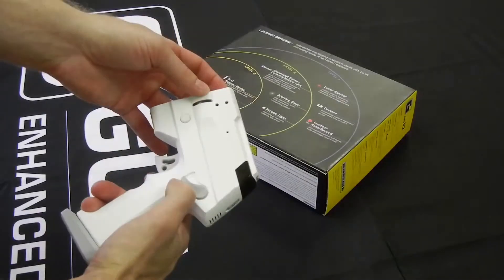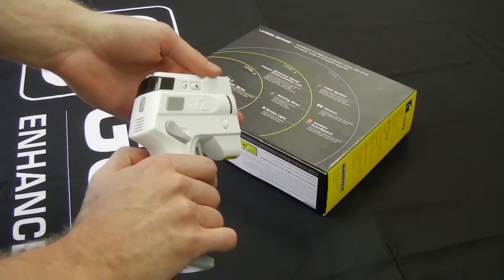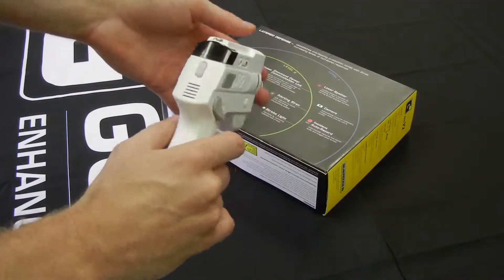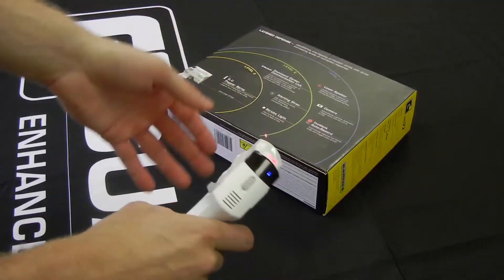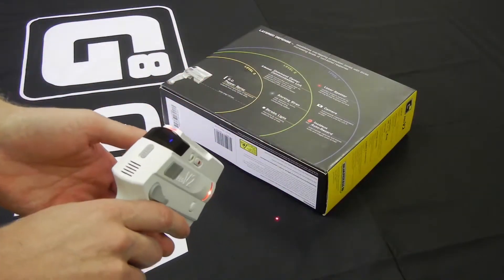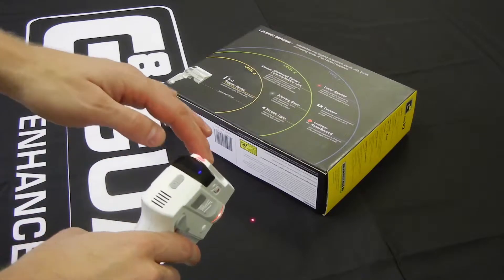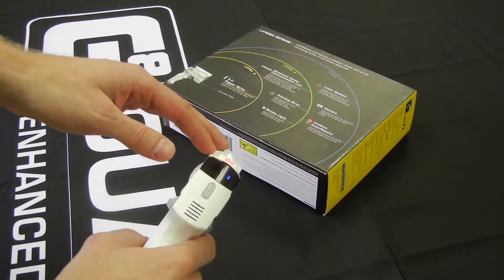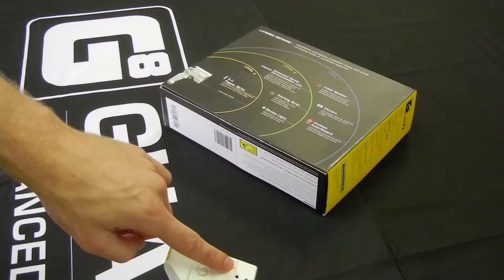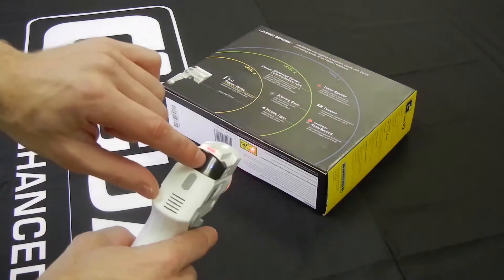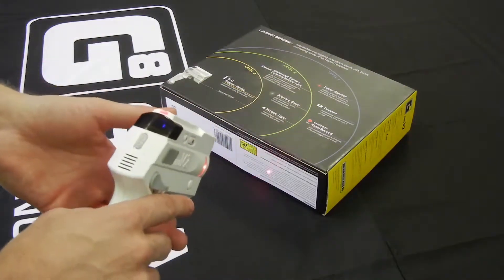To activate level one I simply flip up the ambidextrous arming switch. I can do it with the thumb, I can do it with the hand, either side. But what you see is the lasers activated. You also see the illuminated sights light up. You see the arming ring light up. The Bluetooth indicator is showing solid because I'm properly paired.